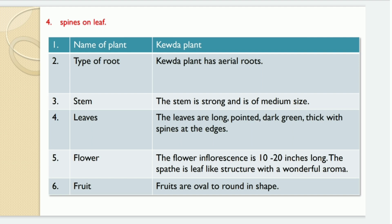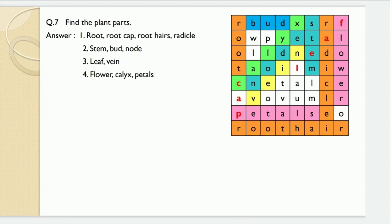Now the next type of plant having spines on leaf — the example is the Kevda plant. The Kevda plant has aerial roots. The stem is strong and of medium size. The leaves are long, pointed, dark green and thick with spines at the edges. The flower inflorescence is 10 to 20 inches long. The spathe is a leaf-like structure with a wonderful aroma. The fruits are oval to round in shape.